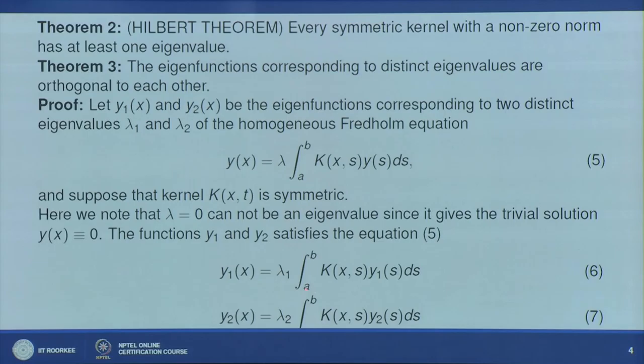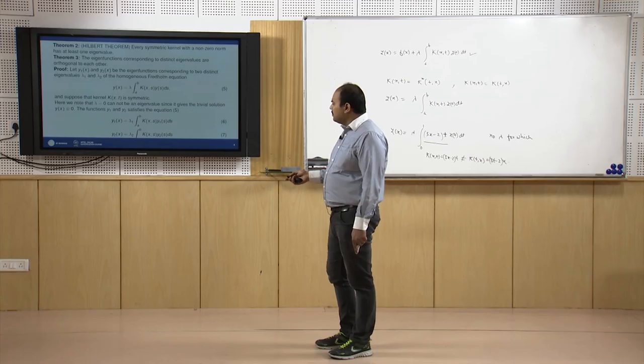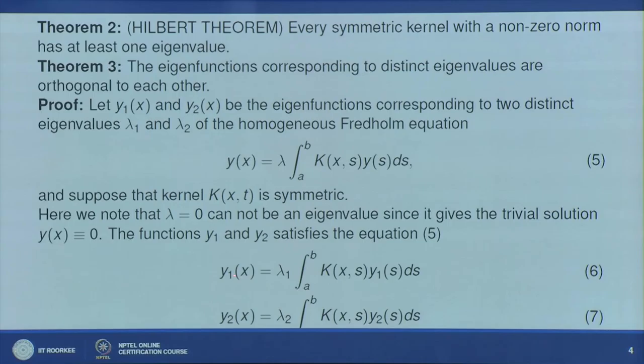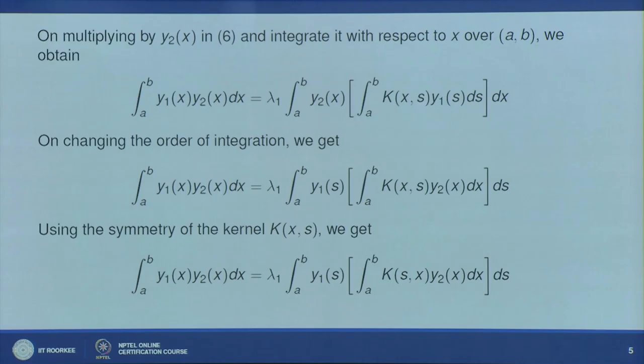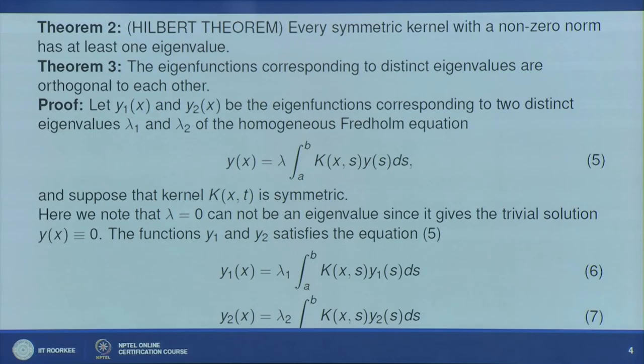We have equations: y₁(x) = λ₁ ∫[a to b] k(x,s) y₁(s) ds and y₂(x) = λ₂ ∫[a to b] k(x,s) y₂(s) ds. With these two equations we want to show y₁ and y₂ are orthogonal. We multiply equation 6 by y₂(x) and integrate from a to b, or equivalently multiply equation 7 by y₁(x) and integrate.